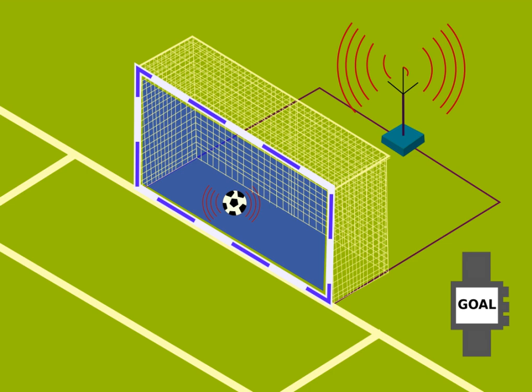The objective of goal line technology is not to replace the role of the officials, but rather to support them in their decision making. The GLT must provide a clear indication as to whether the ball has fully crossed the line, and this information will serve to assist the referee in making his final decision.